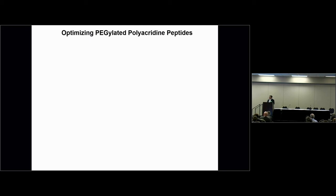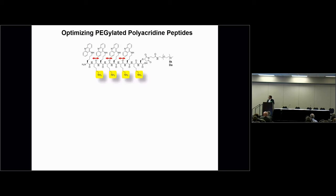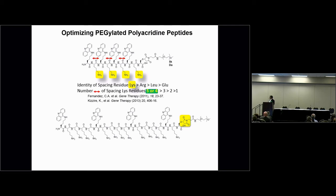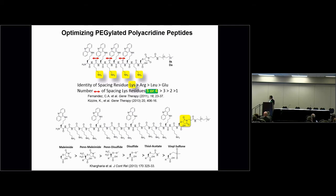We did significant optimization around this molecule. We identified that lysine was the best spacing amino acid between acridine residues, and the optimal number of spacing amino acids is four or five. These experiments were also followed by pharmacokinetics on radioactive DNA nanoparticles and gene expression experiments — luciferase expression in animals — with the DNA nanoparticles. The peptide is also strongly influenced by the linker chemistry connecting the PEG. We tried all linker chemistries, and PEG maleimide turned out to be best for metabolic stability. We also varied PEG length across a range and found 5 kDa to be optimal.